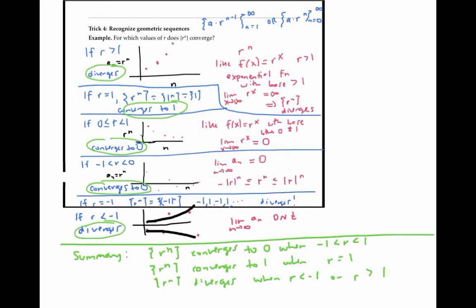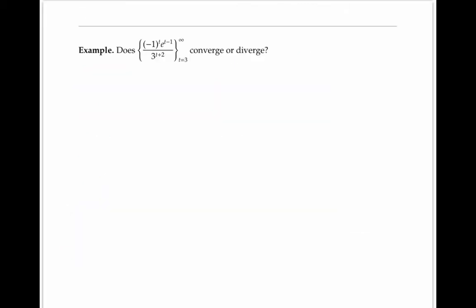Almost the same thing is true for the sequence a·r^n where a is any real number. The sequence a·r^n converges to zero when r is between negative one and one, converges to a when r equals one, and diverges when r is less than negative one or greater than one. This follows because multiplying all terms by a just multiplies the limit by a, and zero times a is zero while one times a is a. So anytime you encounter a geometric sequence in the form a·r^n, it converges if r is bigger than negative one and less than or equal to one.